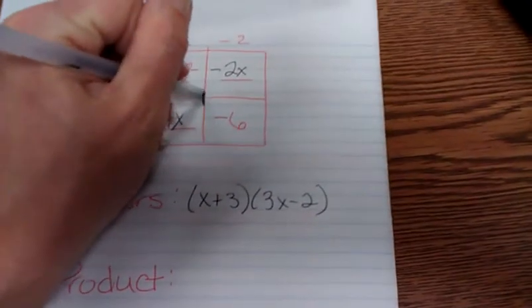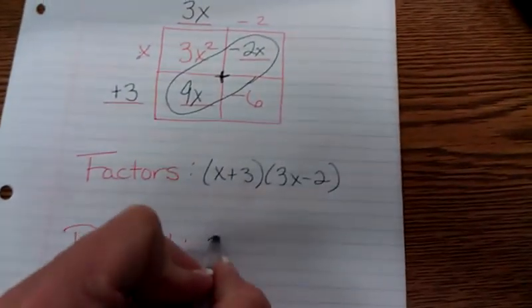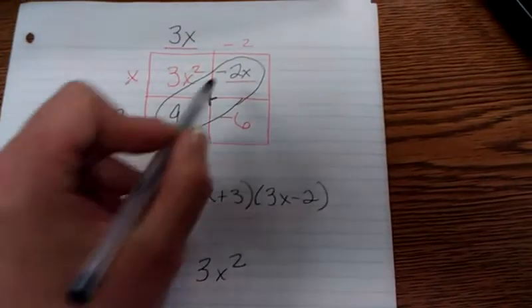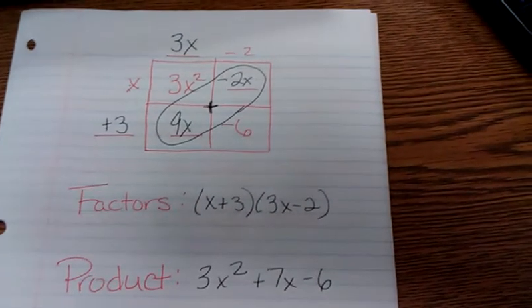Now, my product is what's on the inside. So, let's add these together right here. And I get 3x squared. 9 minus 2 is 7. So, I have 7x minus 6. That's my answer.